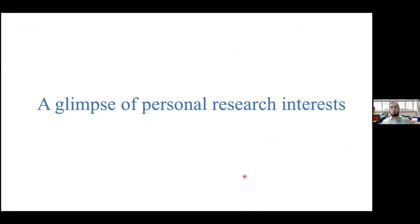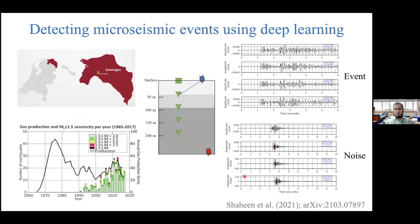Now I'll provide a quick glimpse of my personal research interests and go over different topics. This is a diverse audience and I think one of these topics may match your interests. The first topic is detecting microseismic events using deep learning. People have been working on detecting low-magnitude events using deep learning for induced seismicity applications and detecting micro-earthquakes.